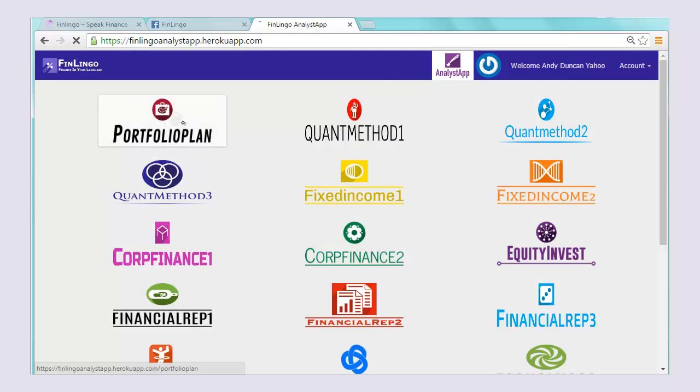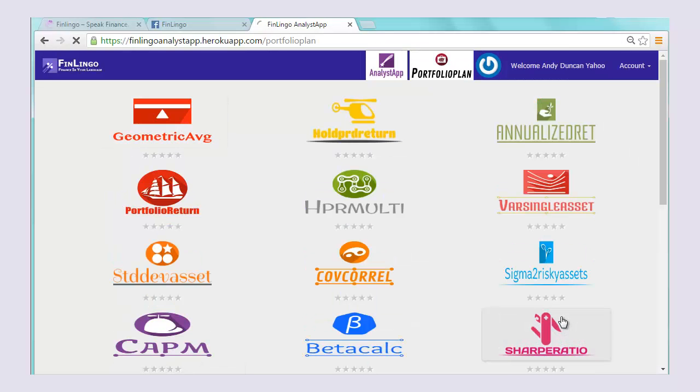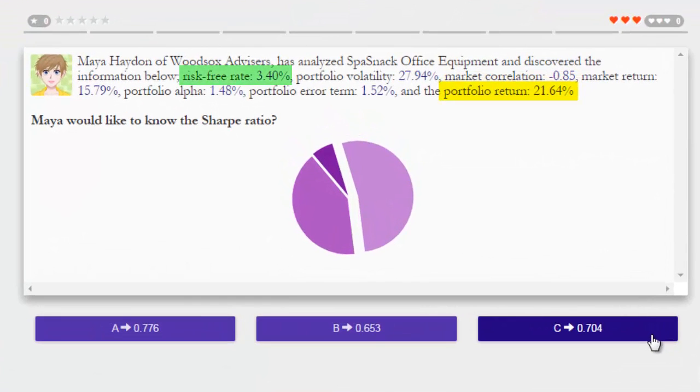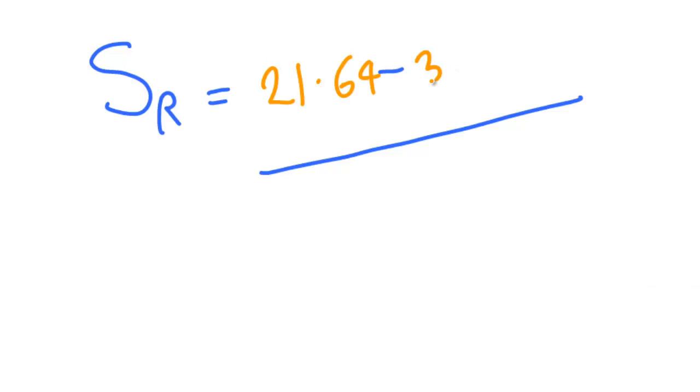Now let's do an example with finlingo.com. First of all, we pick up the expected return, the risk-free rate, and the portfolio's recorded risk volatility. Now we plug these three figures into the Sharpe Ratio equation to get the desired ratio output.